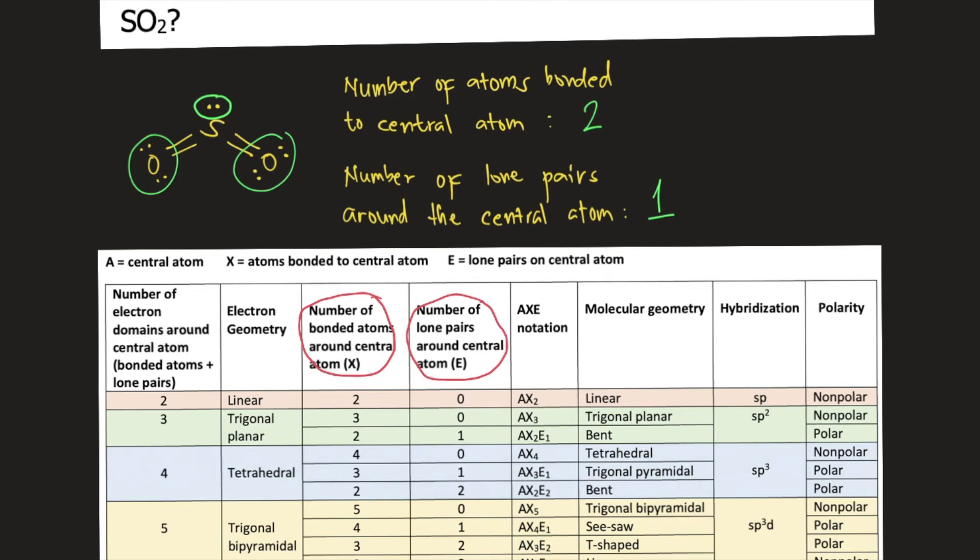We figured out that we have two bonded atoms around the central atom and one lone pair around the central atom. Therefore, we will know the molecular geometry, which is bent.